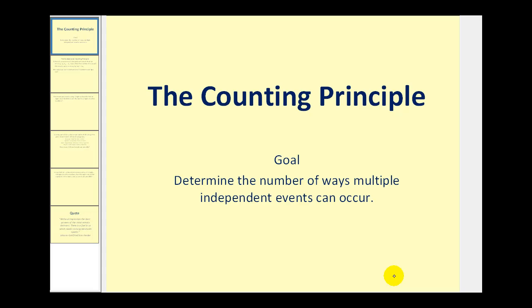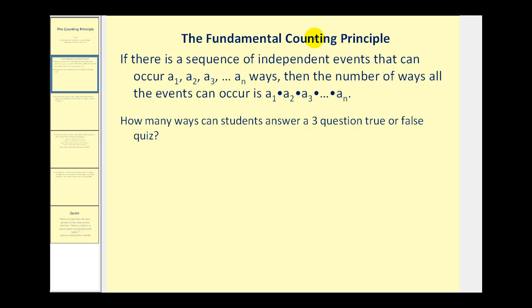Welcome to a lesson on the counting principle. The goal of this video is to determine the number of ways multiple independent events can occur. The fundamental counting principle states: if there's a sequence of independent events that can occur a₁, a₂, all the way out to aₙ ways, then the number of ways all of the events can occur is a₁ times a₂ times all the way out to aₙ.